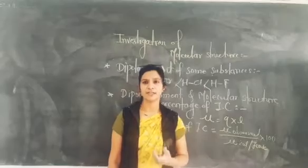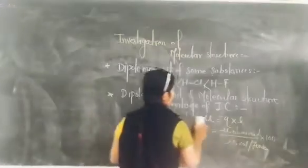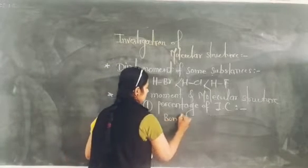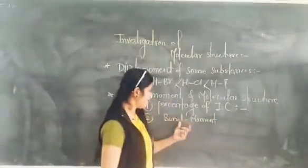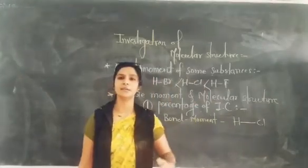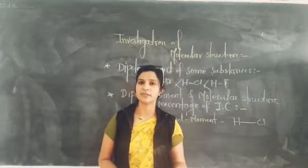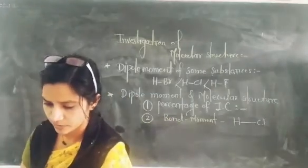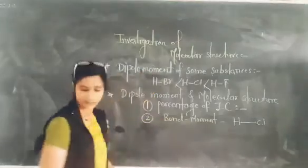The next term is bond moment. After percentage of ionic character, the second term is bond moment. As we discussed previously, the molecule is joined with each other by a covalent bond — it may be a single bond or a double bond — and that covalent bond can decide the dipole moment of the molecule. Therefore, the second point is also very important: bond moment, and the polarity of the bond is completely dependent on the bond moment.